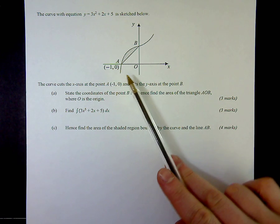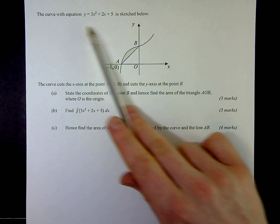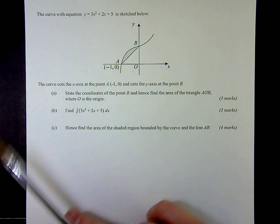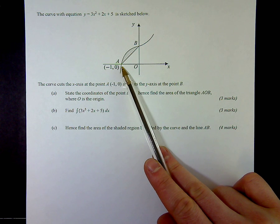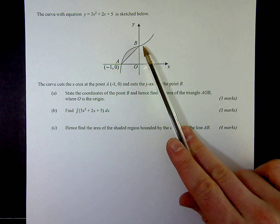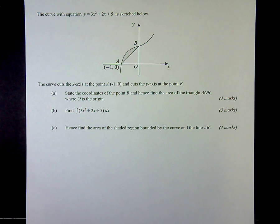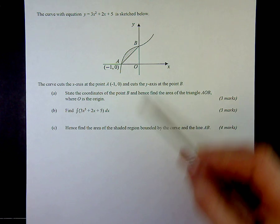So we've got a curve with a given equation here: y equals 3x squared plus 2x plus 5. We're given the point where it cuts the x-axis is minus 1, 0, but not the point it cuts the y-axis. We'll label this point B. Question A says: state the coordinates of the point B, hence find the area of triangle AOB.